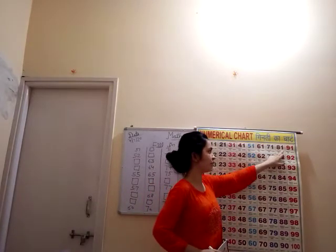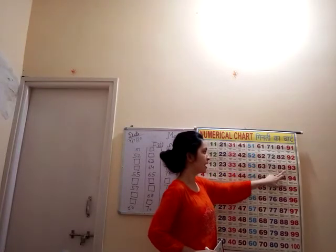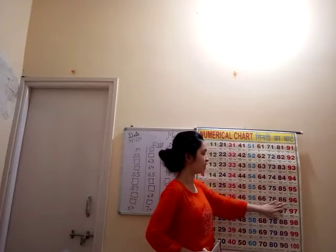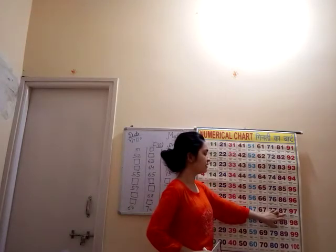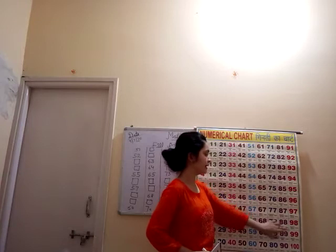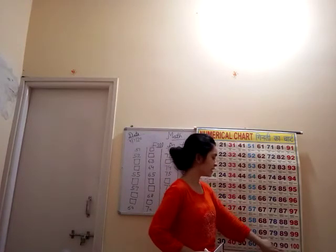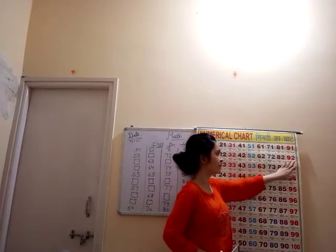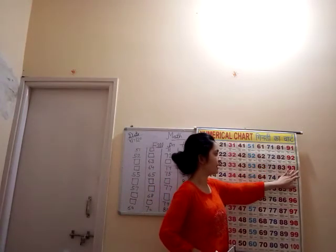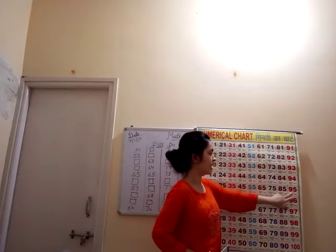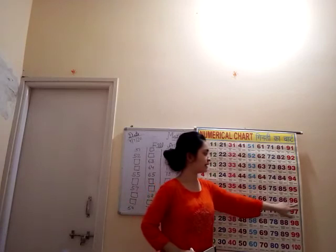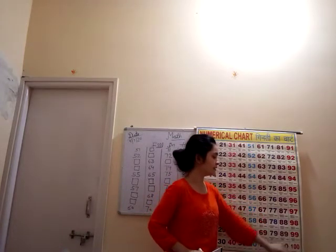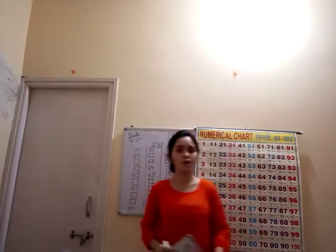80 ke bad? 8, 1, 81. 8, 2, 82. 8, 3, 83. 8, 4, 84. 8, 5, 85. 8, 6, 86. 8, 7, 87. 8, 8, 88. 8, 9, 89. 89 ke bad kya atar? 9, 0, 90. 90 ke bad? 9, 1, 91. 9, 2, 92. 9, 3, 93. 9, 4, 94. 9, 5, 95. 9, 6, 96. 9, 7, 97. 9, 8, 98. 9, 9, 99. 99 ke bad? 1, 0, 0, 100.